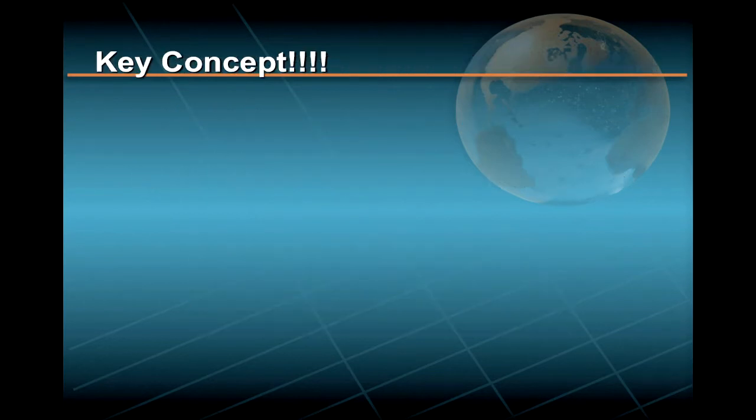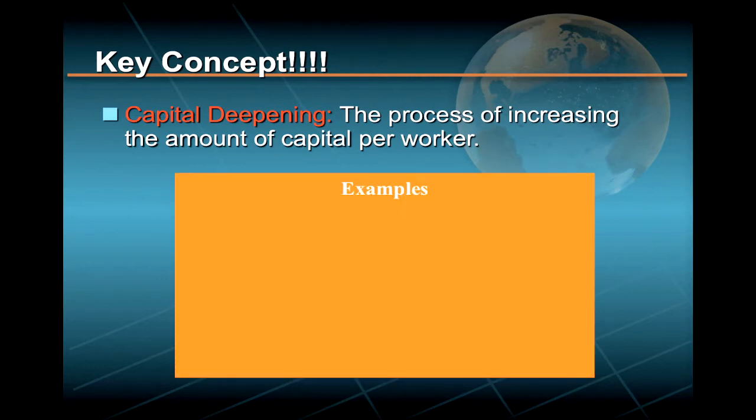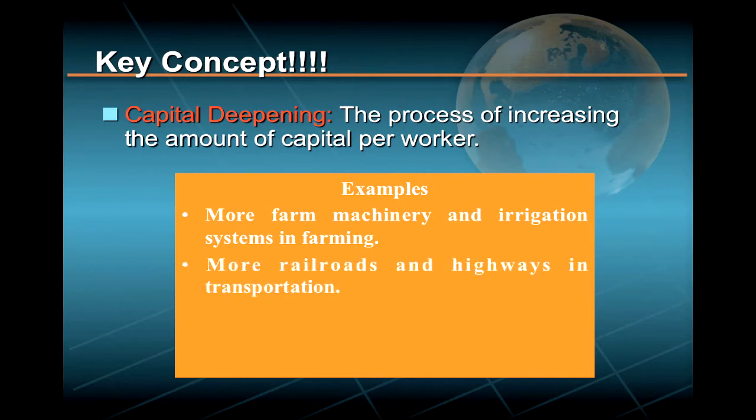The basic underlying principle of the neoclassical growth model is what economists call capital deepening. This is the process of increasing the amount of capital per worker. Examples of capital deepening include more farm machinery and irrigation systems in farming, more railroads and highways in transportation, and more computers and communication systems in banking.